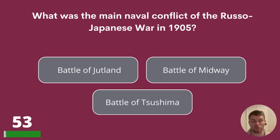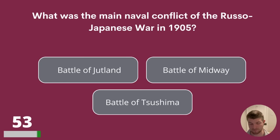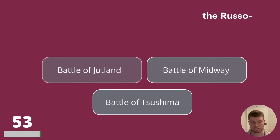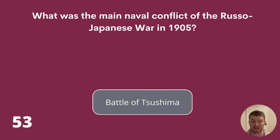Question 53. What was the main naval conflict of the Russo-Japanese War in 1905? Battle of Jutland, Battle of Midway, or Battle of Tsushima? The answer is the Battle of Tsushima.